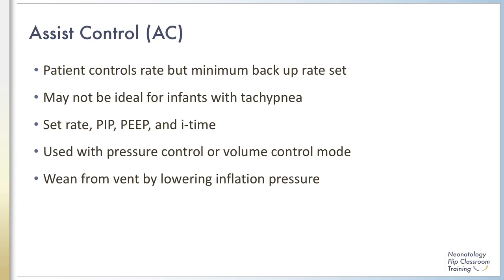With this mode, clinicians would want to choose a backup rate that is close to but below the infant's spontaneous rate so that the infant can trigger the ventilator. A backup rate that is too low can result in excessive fluctuations in minute ventilation during periods of apnea, which could lead to fluctuations in the partial pressure of CO2 and saturation of oxygen. The clinician sets the rate, PIP, PEEP, and inspiratory time.